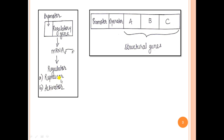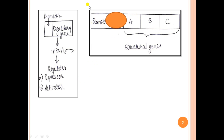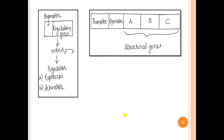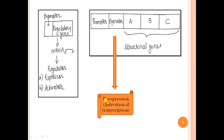The repressor, as the name suggests, brings about repression — that is, inhibition of the transcription of the structural genes. It does so by binding to the operator. Once this repressor goes and binds to the operator, RNA polymerase cannot bind to the promoter, and therefore you see repression — no transcription of the structural genes takes place. But if the repressor detaches from the operator, then you will have derepression, meaning removal of the repression, or activation of transcription.